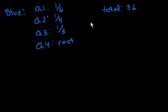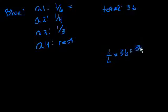How many points did the blue team score in the fourth quarter? Well, the total points are 36, right? So it scored 1/6 in the first quarter, so 1/6 of 36. You could do that in your head or just multiply fractions. 1/6 times 36 equals 36 over 6, which equals 6, right? So it scored 6 points in the first quarter.